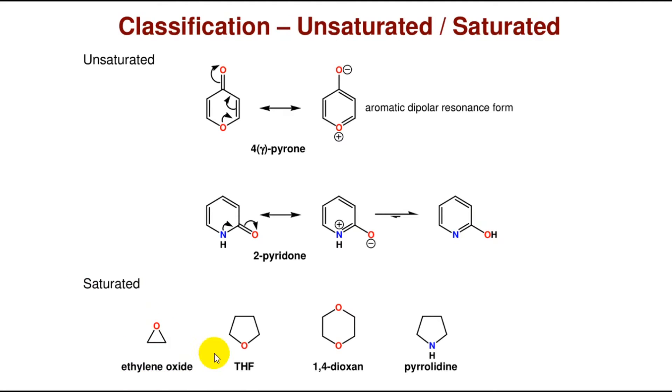Isolated examples of unsaturated heterocyclics include ethylene oxide, tetrahydrofuran, 1,4-dioxane, and pyridine.